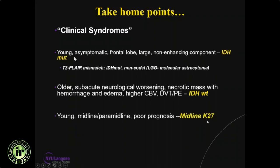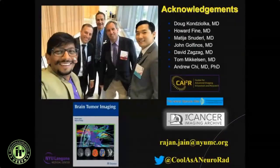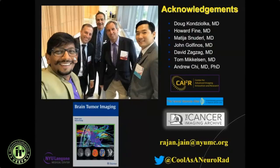Diffuse midline H3K27 mutant gliomas occur mostly in younger patients — young children or young adults — in midline/paramidline locations: thalamus, brainstem, spinal cord — usually with poor prognosis and leptomeningeal spread. BRAF tumors occur in young adults or children, either asymptomatic or presenting with seizures, in cortical locations, many with cysts or cyst with mural nodule. I want to thank my collaborators — this work is not possible without a team effort. We have a brain tumor board including eminent neuro-oncologists, radiation oncologists, neurosurgeons, and neuropathologists at NYU. Thank you very much.